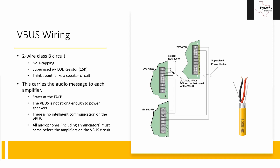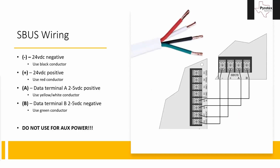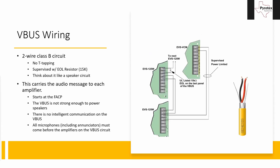On each of these slides I've also shown the type of wire needed. For VBUS, you use yellow-jacketed shielded two-conductor wire — the same wire used for speaker circuits. For SBUS, it's the white-jacketed four-conductor wire. Sometimes wire colors may need to be red or red-with-yellow-stripe if an engineer specifies a particular color, but whenever we have the choice, these are the preferred colors to keep everything straight in our panels.